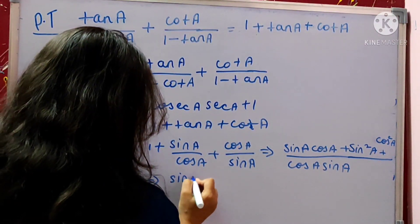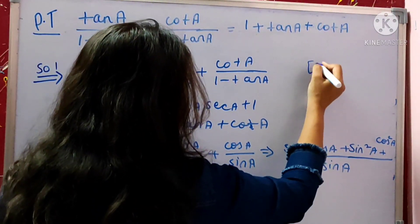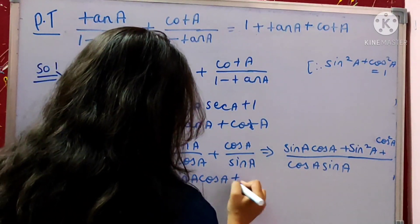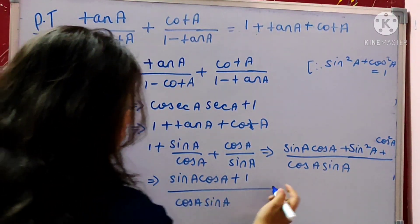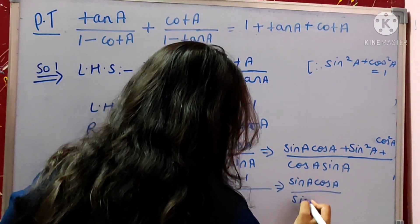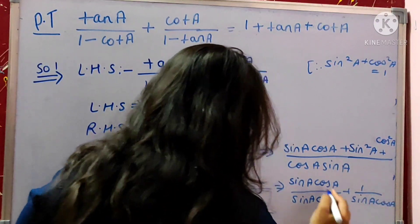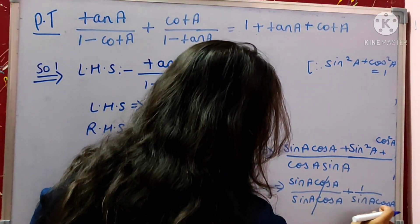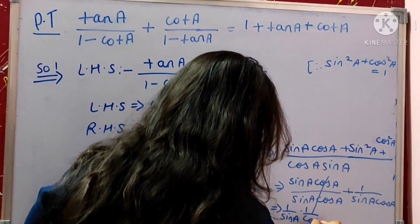After that, sin squared A plus cos squared A gives value 1 using the identity. So we have (sin A cos A plus 1) divided by sin A cos A. Splitting this: sin A cos A divided by sin A cos A, plus 1 upon sin A cos A. The first term cancels to 1, and splitting 1 upon sin A cos A gives 1 divided by sin A multiplied by 1 divided by cos A plus 1.